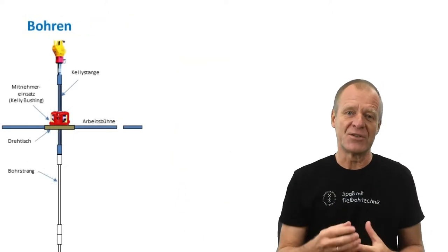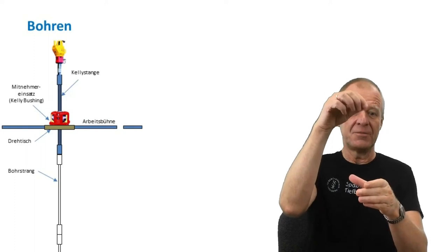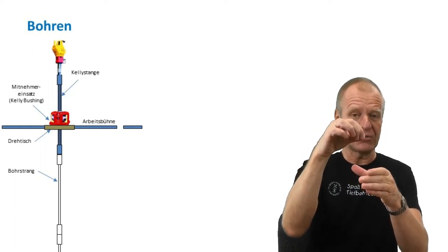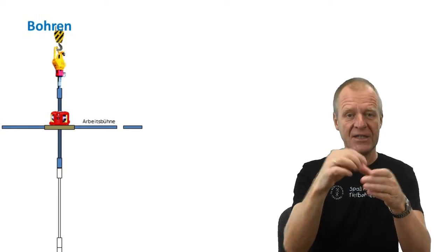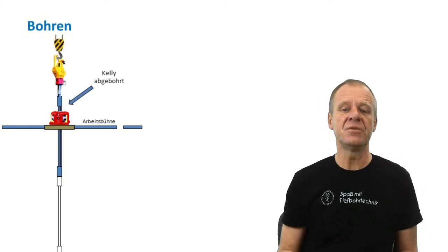If we now start drilling and the drill bit goes on bottom, the rotating Kelly rod will slowly move downwards through the Kelly bushing until it is drilled off and can go no further. Now it is time to make a new connection.